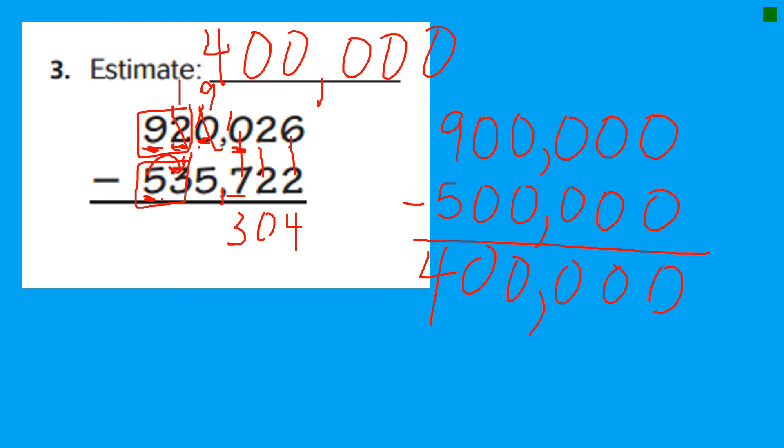10 minus 7 is 3. You guys know how to make 10s pretty well, I bet. 10 minus 7 is 3. Okay, on to the thousands. 9 minus 5.